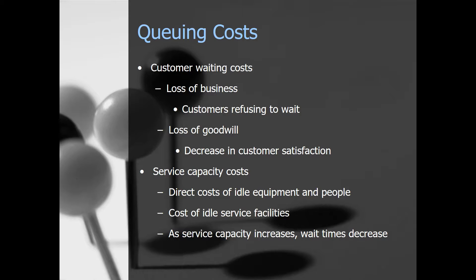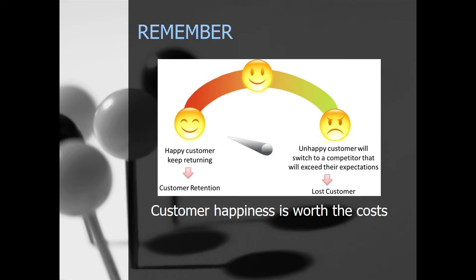The other cost is service capacity costs — the direct costs of idle equipment and people. The cost of idle service facilities is the payment made to servers for periods in which they remain idle. So you're paying for those servers to help customers, but if you're not helping customers, you're wasting money. As service capacity increases, there's a decrease in the number of customers in line and their wait times, which reduces queuing costs. Remember, happy customers will come back; unhappy customers won't.